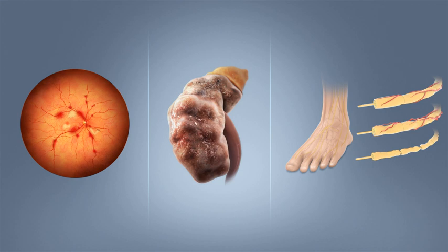Diabetes mellitus is classified into four broad categories: type 1, type 2, gestational diabetes, and other specific types. The other specific types are a collection of a few dozen individual causes. Diabetes is a more variable disease than once thought and people may have combinations of forms. The term diabetes, without qualification, usually refers to diabetes mellitus.